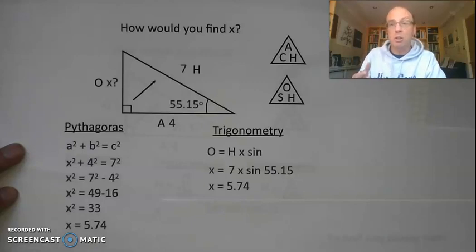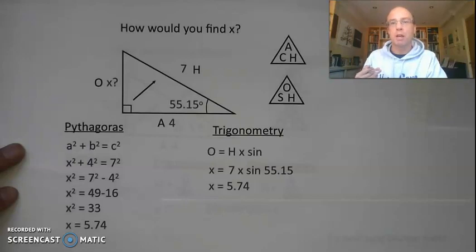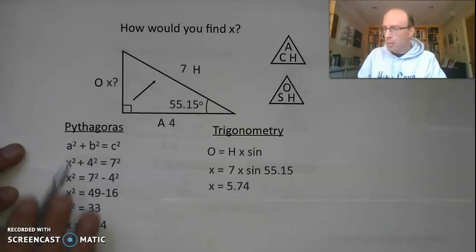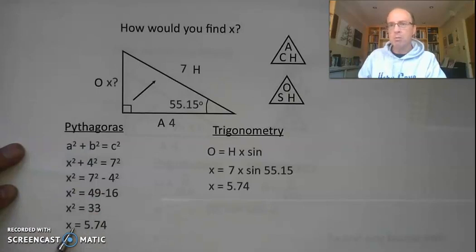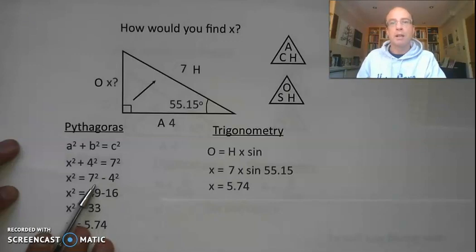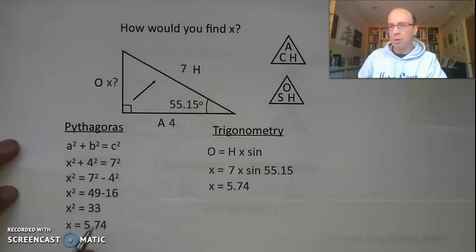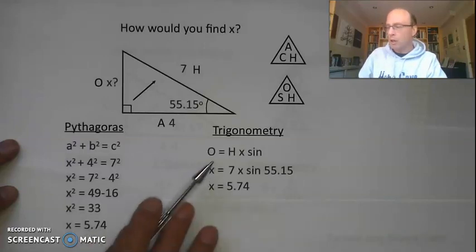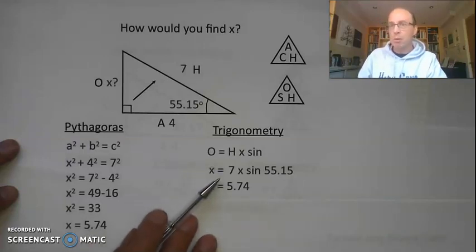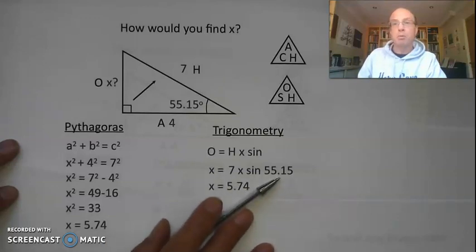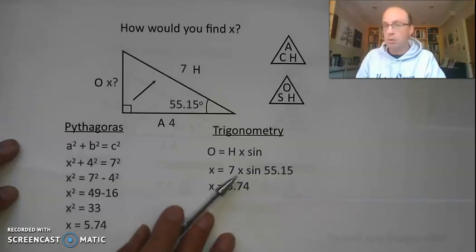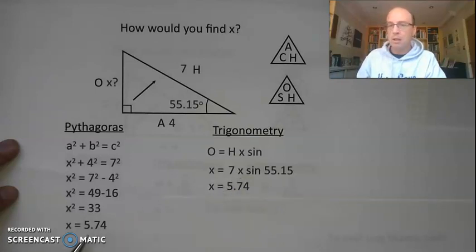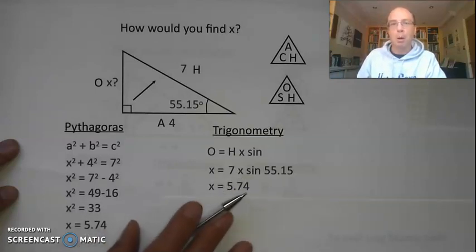I could have used the tangent ratio; I chose sine. Again, we had three possible options to arrive at the same value. In this case the Pythagoras approach was possibly a little more difficult — I had to remember to subtract to find the shorter side, which is slightly more likely to go wrong. The trigonometry approach was quite a bit shorter: just 7 times sine of 55.15. Either approach is completely correct.